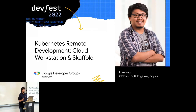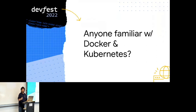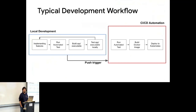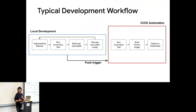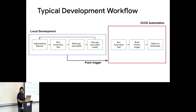All of my work is related to how to improve developer productivity. Before we start — most of you are familiar with Docker and Kubernetes, and quite a few are already running Kubernetes in production. This is how we do typical development in Kubernetes: we have our local computer, implement features, run automated tests, build the executable, test it locally, and eventually push to a Git repository where the CI/CD pipeline kicks off.